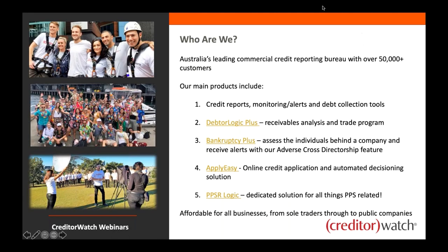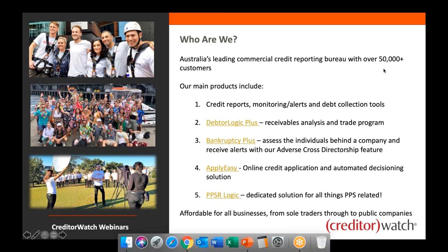CreditorWatch is Australia's leading commercial credit reporting bureau with over 50,000 customers. Our main products centre around credit reporting, monitoring, alerts, and debt collection tools. We also have a receivables analysis and trade data tool called Data Logic, Bankruptcy Plus which provides data around individuals behind a company, ApplyEasy which is our online credit application and automation solution, and finally PPSR Logic, which is our proprietary PPSR tool.